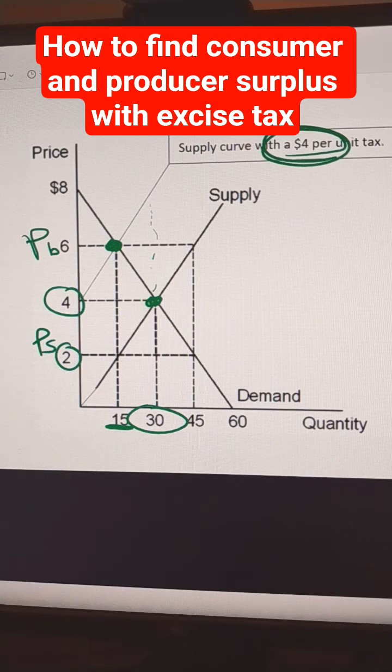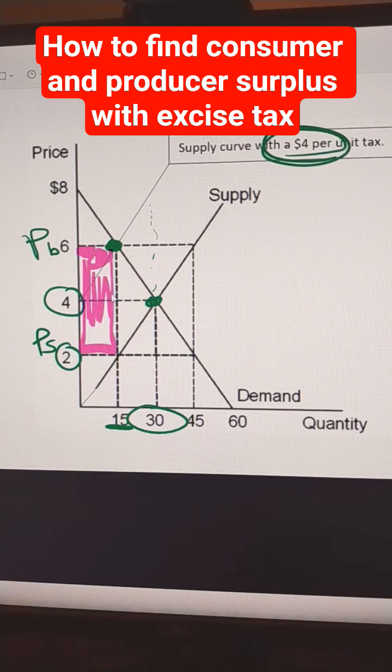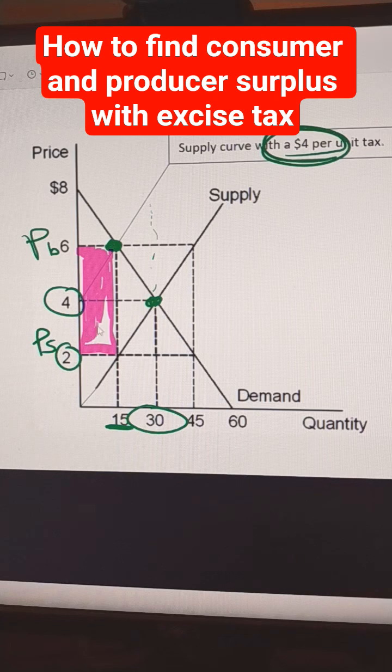The amount that is kept by the government is going to be this pink area right here. That would be the $4 tax times the 15 units, which would be $60.